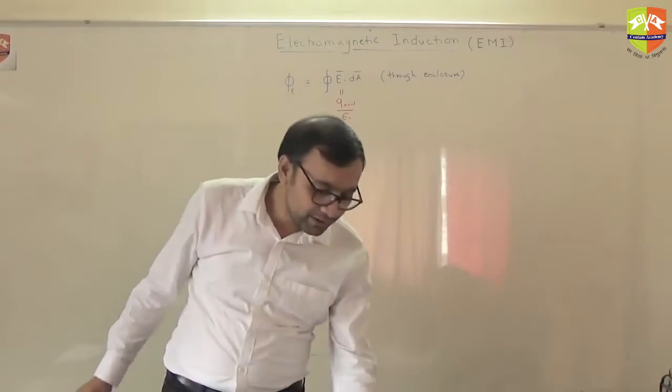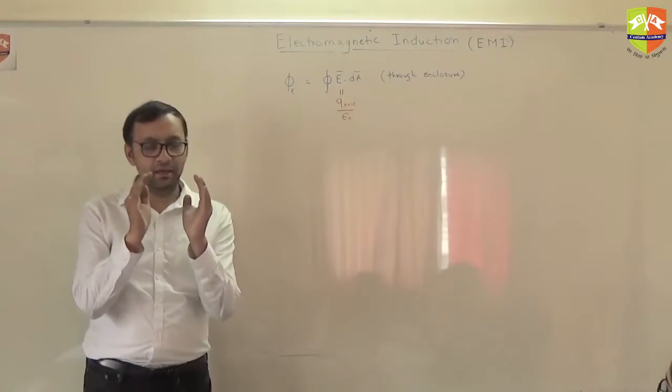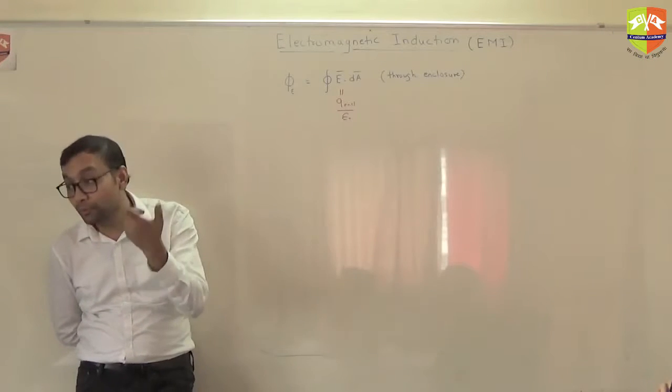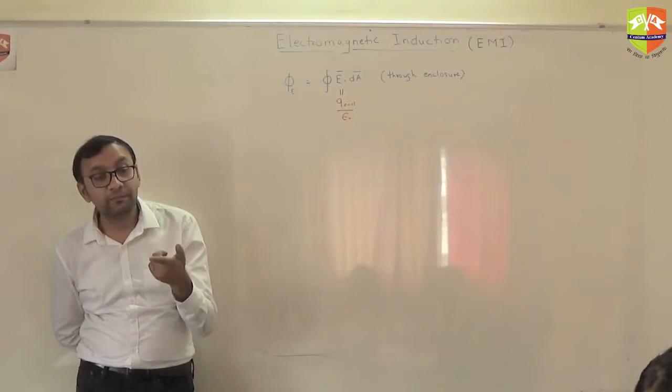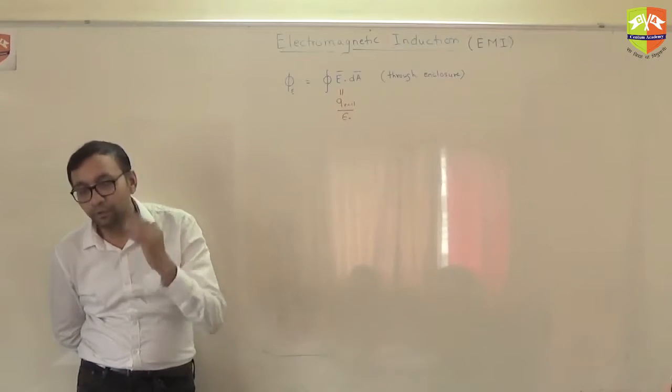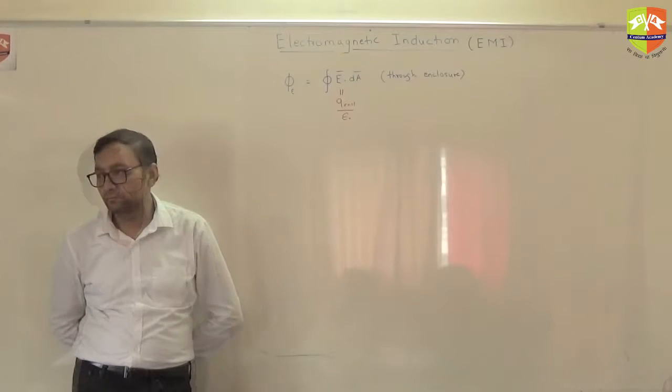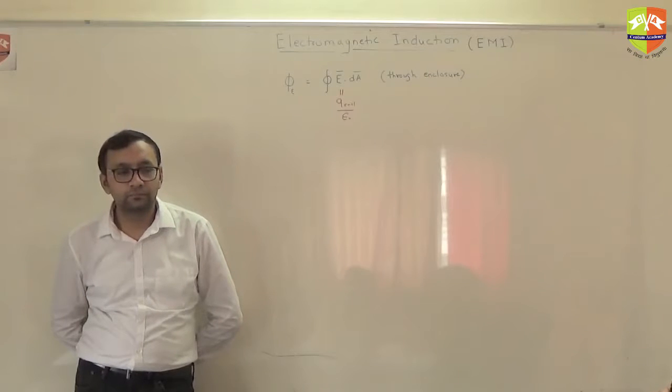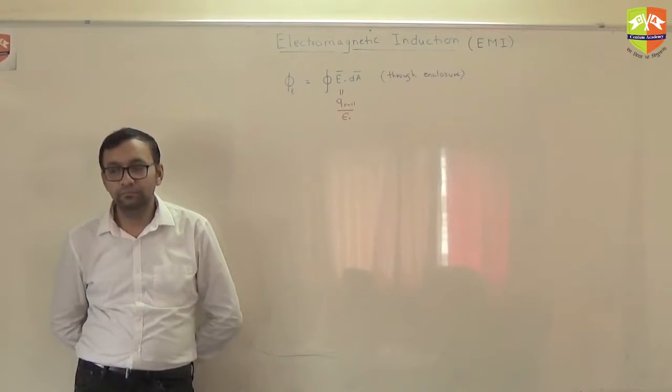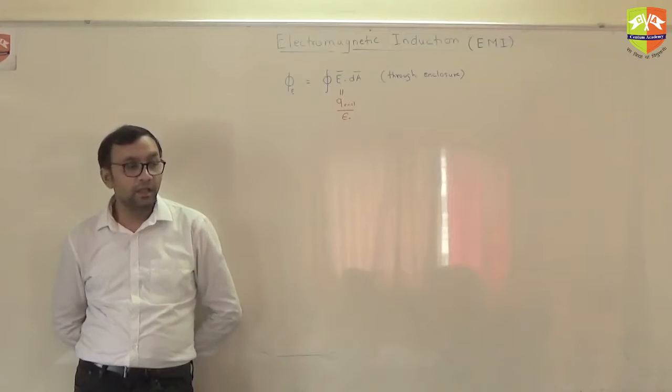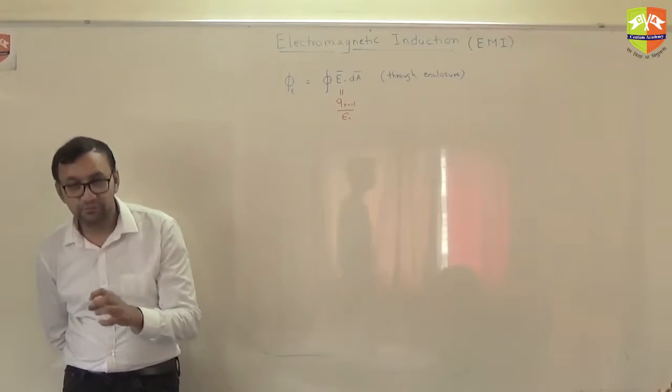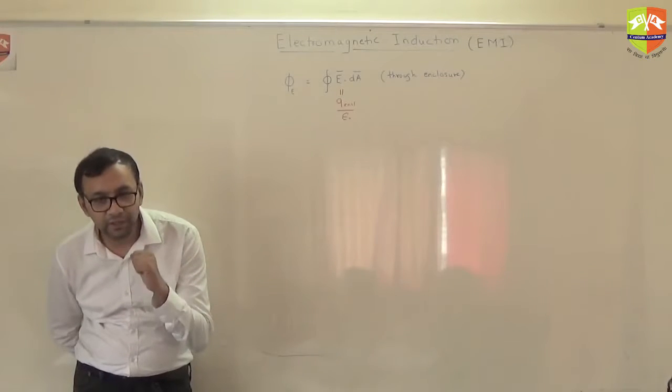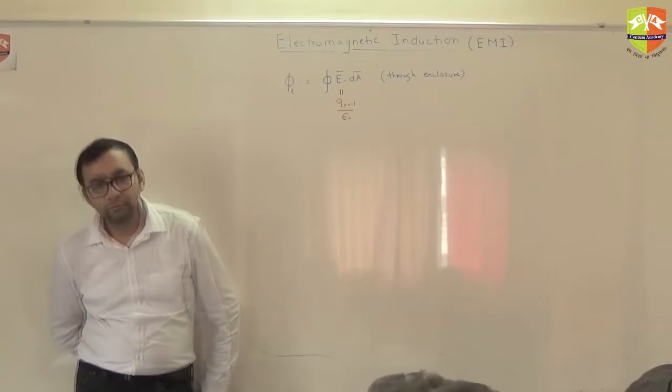Can you tell me, how much is the magnetic flux in an enclosure? This is for electric flux. How much should be B·dA integral, right? That should be equal to what? B·dA to a closed surface. Net flux through the closed surface due to magnetic field is what? It is zero.